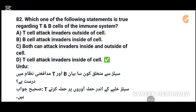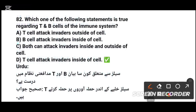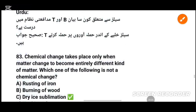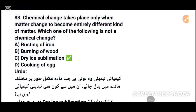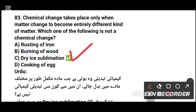MCQs number 83: Chemical changes take place only when matter changes to become an entirely different kind of matter. Which one of the following is not a chemical change? Dry ice sublimation — that is not a chemical change. Tick the correct option.